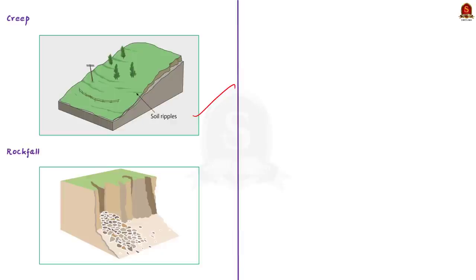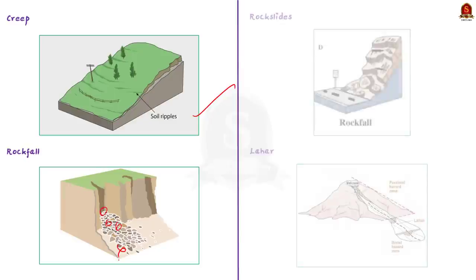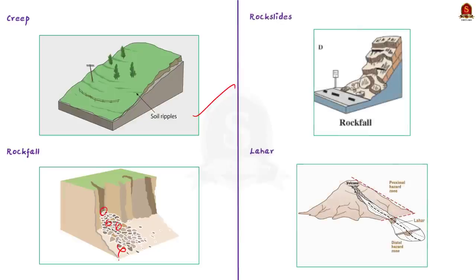Fourth is rock fall — sudden and fast-moving events where individual rocks or boulders detach and fall from a steep slope. Fifth is rock slide — a mass of rock, either with or without soil, slides down a slope; it is typically slower than a rock fall.